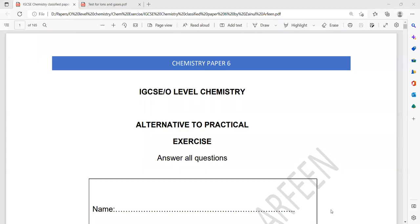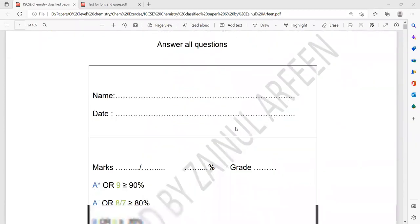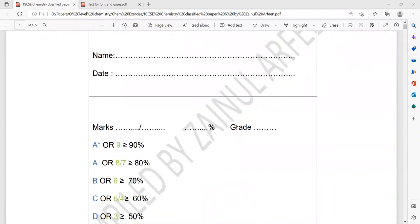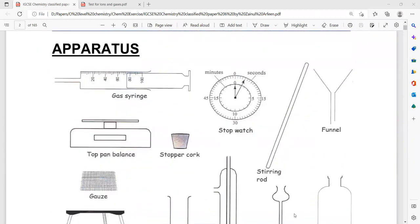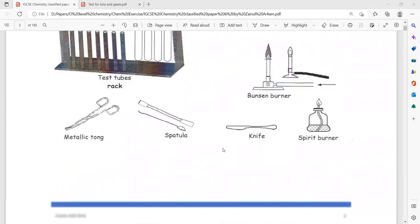This is a classified paper 6 of chemistry. The things you have to memorize are given in the first 10 pages. You have to learn the apparatus, how different gases can be collected, the tests for the gases.